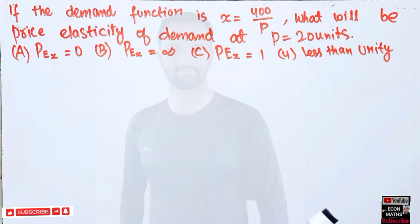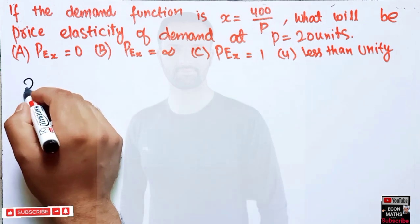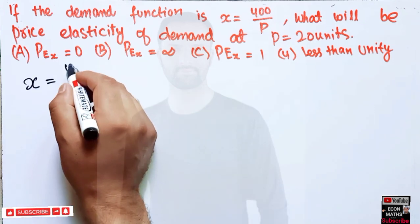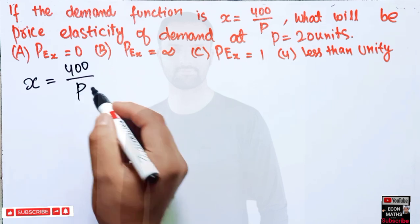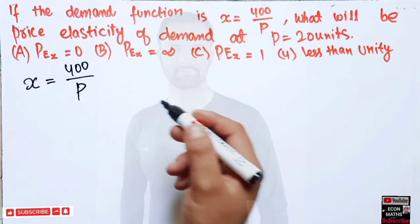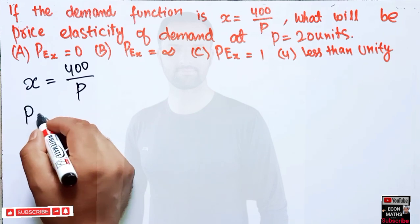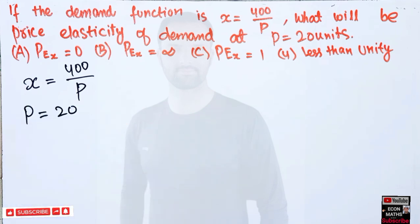So we will see how to solve this. We are being given the demand function: x equals 400 upon p. This is our demand function. Also, we are being given p equals 20.